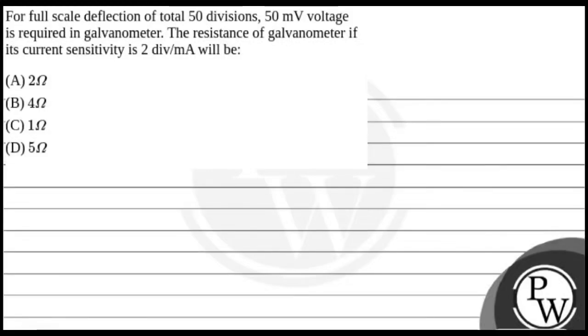Hello, let's see this question. The question says for full scale deflection of total 50 divisions, 50 millivolt is required in galvanometer. The resistance of galvanometer if the current sensitivity is 2 division per milliampere will be. Our options are: A) 2 ohm, B) 4 ohm, C) 1 ohm, and D) 5 ohm.